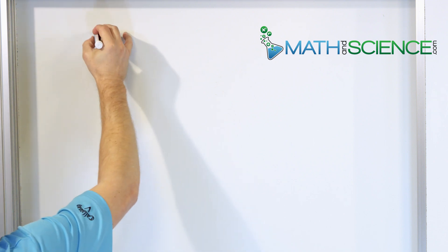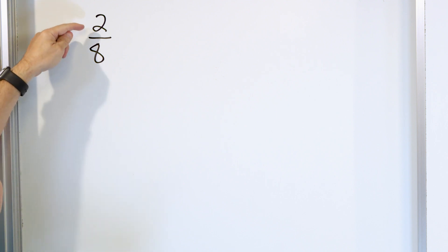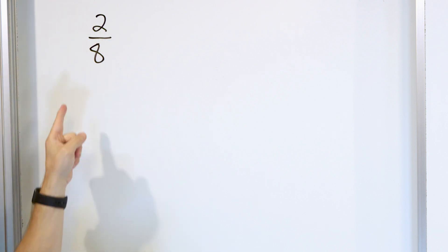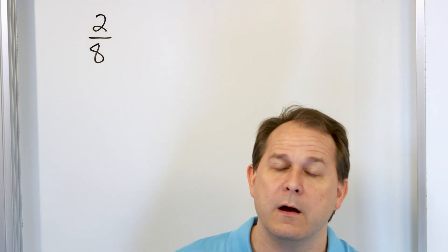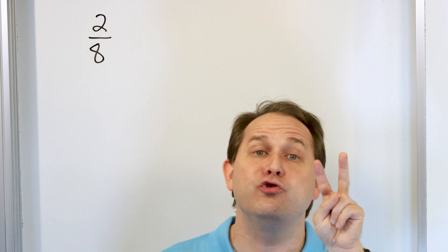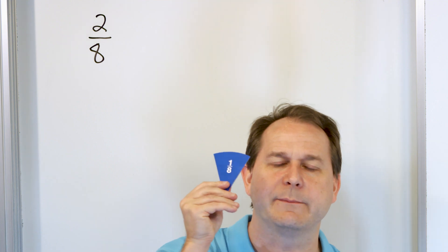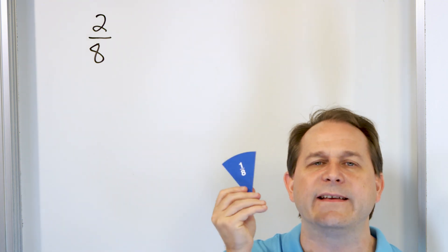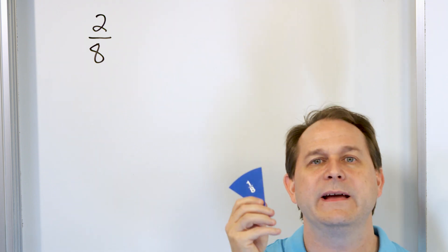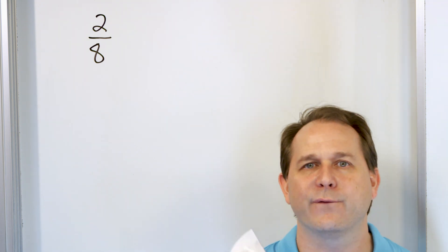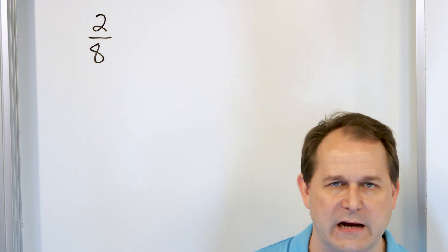Let's take the fraction 2/8ths. I've been telling you since we started that what this means is 2 pieces out of 8 of a pizza. Cut a pizza into 8 slices — every slice would be 1/8th. But you don't have 1/8th, you have 2/8ths. So I've been teaching you to think of these slices as things that you count. This is 1/8th; if you have 2 of them, it's 2/8ths, then 3/8ths, then 4/8ths. You've been counting these slices, counting in 8ths the whole time.